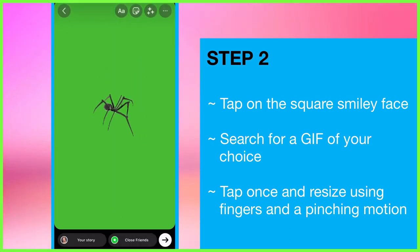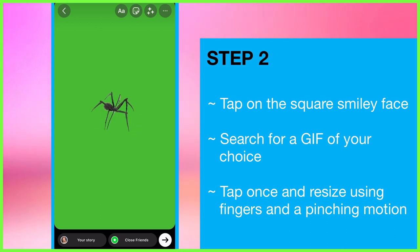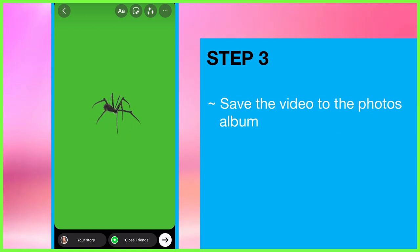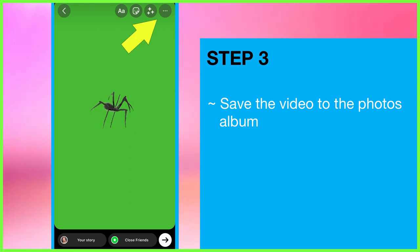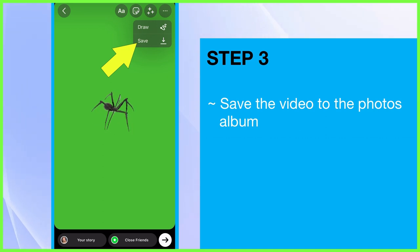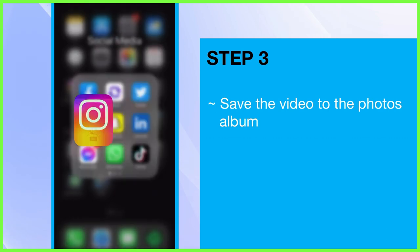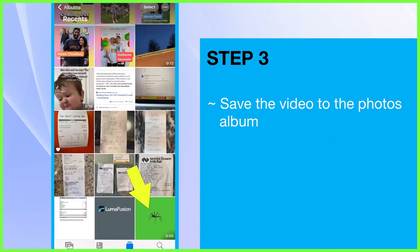At no stage in this process are we actually publishing anything to Instagram, so none of your followers will see what you're creating. We're simply using Instagram to get our GIFs to add to LumaFusion. We're going to save what we've created directly to our camera roll — tap on the three dots at the top right of your screen and tap save. Then leave Instagram and head to your camera roll where you'll see your video file ready to use.